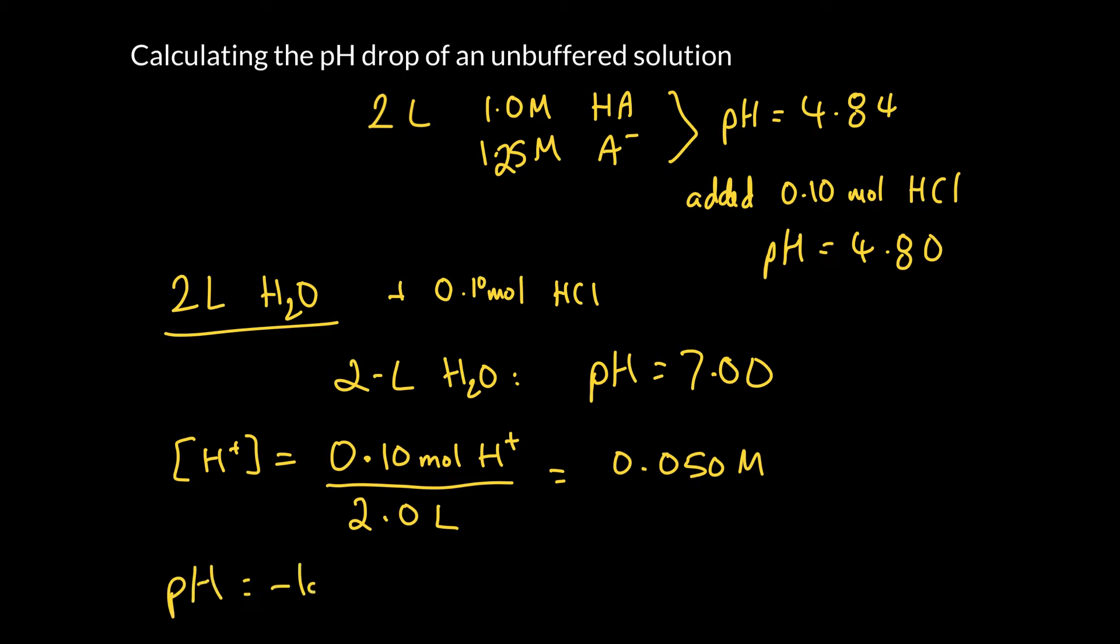So we can see our concentration then is 0.050 moles per liter. And what's the pH? The pH of that solution is the negative log of 0.050. So again two significant figures becomes two decimal places and I get 1.30.